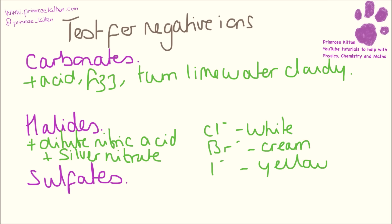Again in the lab these colours are very very subtle to see, but this is what the exam board would like you to write. The last thing you need to do is to test for sulphate ions. You need to add dilute hydrochloric acid and then barium chloride. And if sulphate ions are present, then you will get a white precipitate formed.